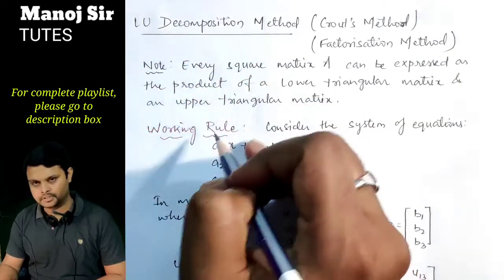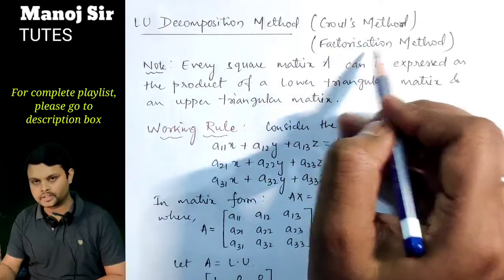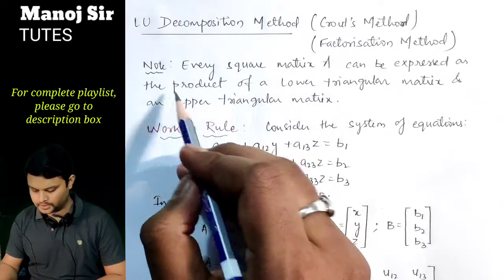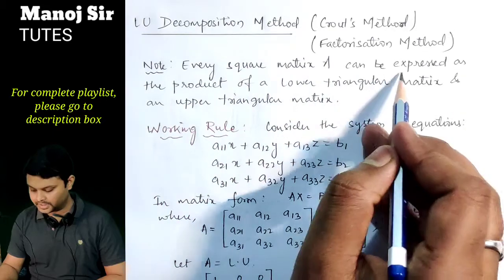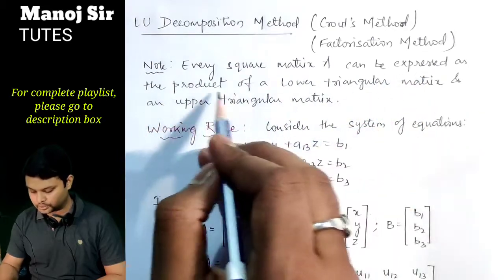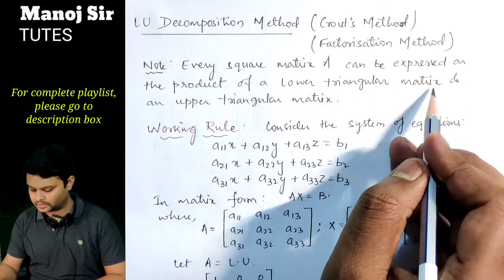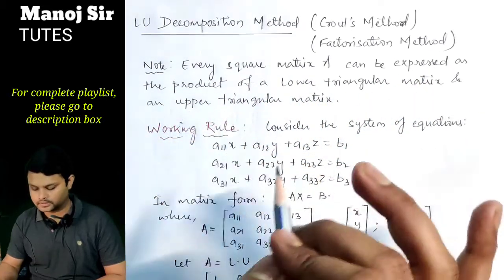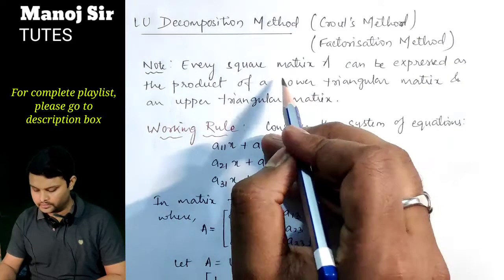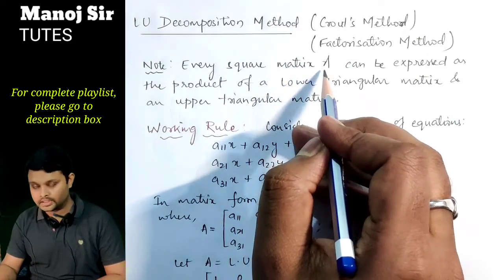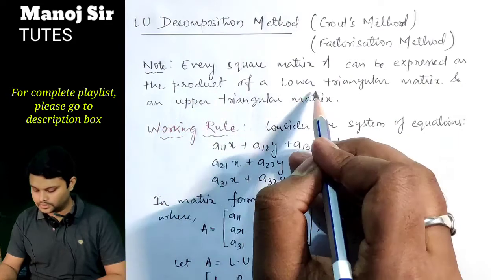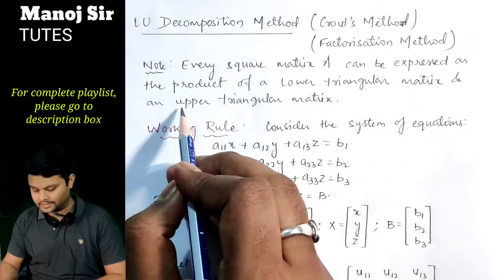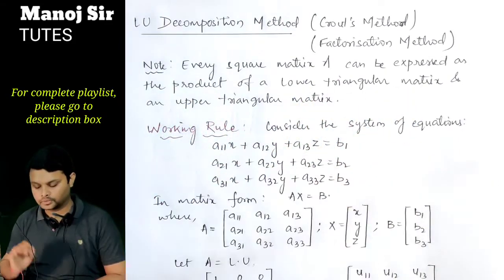LU decomposition method — that is Crout's method or factorization method. There is an important note: every square matrix A can be expressed as the product of a lower triangular matrix and an upper triangular matrix. If you have any square matrix, we can express it as a product of a lower triangular matrix and an upper triangular matrix. Now we will go to the working rule.